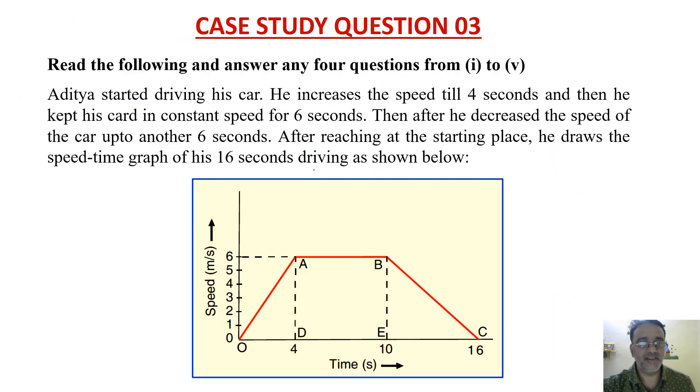Aditya started driving his car. He increases the speed till 4 seconds, and then he kept his car in constant speed for 6 seconds. Then after he decreases the speed of the car up to another 6 seconds. After reaching at the starting place, he draws the speed-time graph of his 16 seconds driving as shown below.